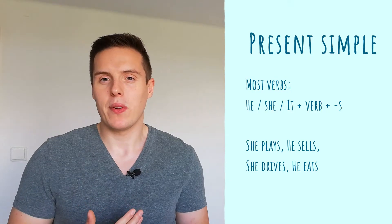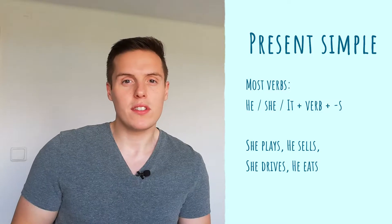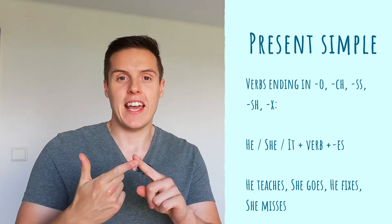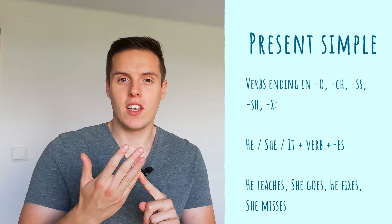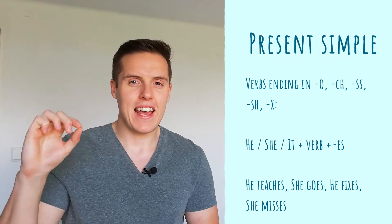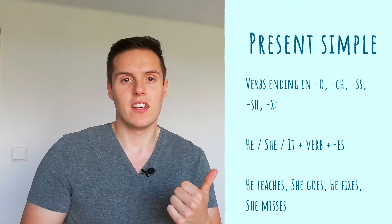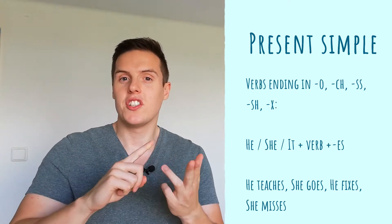For most verbs, we just add an S. So for he, she, it — works, sells, runs, plays. And for verbs ending in O, CH, SS, SH, or X, what we do is add ES to that verb. For example: he teaches, she goes, he fixes, she misses.